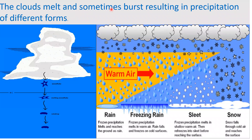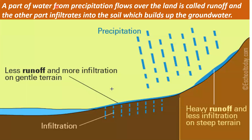The clouds reach the saturation point, and when the water particles become heavy and cannot be held further, they burst and come down in the form of precipitation. A part of water from precipitation that flows over the land is called runoff, and the other part infiltrates into the soil, building up the groundwater.